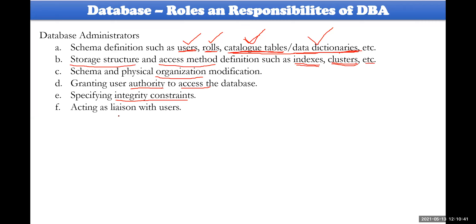The DBA also acts as a liaison — an acting license — between users. If any user wants to increase their storage space, they must communicate with the database administrator. If a user wants to create a cluster, index, or partition, they submit a written requisition to the DBA, who will perform those operations on their behalf.